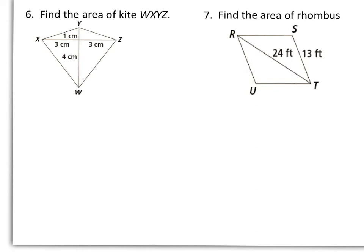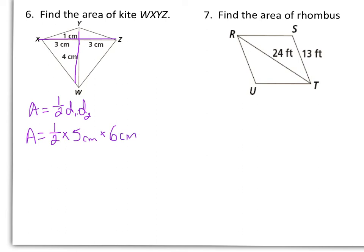Number 6: we want to find the area of kite WXYZ. Area of a kite is one-half times diagonal 1 times diagonal 2. One diagonal is 1 plus 4, so 5 centimeters, and the other diagonal is 3 plus 3, or 6 centimeters. Multiplying straight across: area equals one-half times 5 times 6, so the area is 15 centimeters squared.